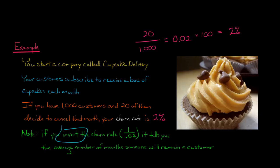When I say invert it, I mean if you take 1 and divide that by the churn rate. So our churn rate was 2%, so you put that in the denominator and put 1 in the numerator. That will actually tell you the average number of months that someone is going to remain a customer.